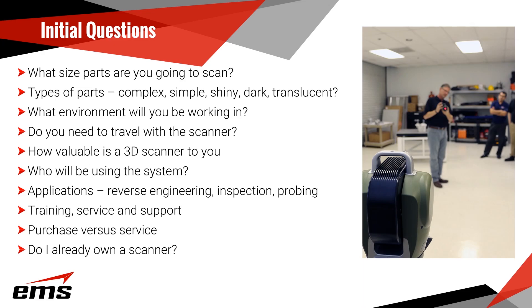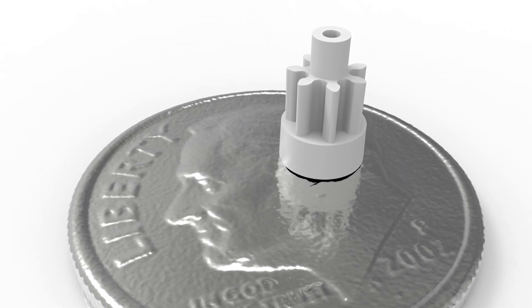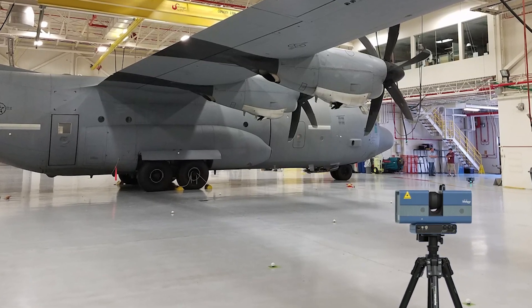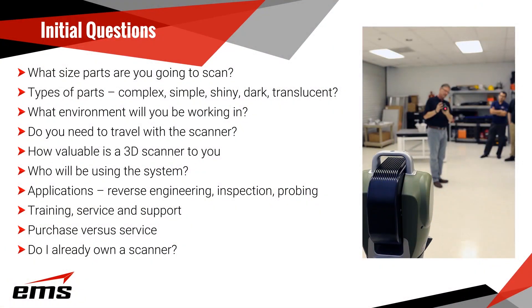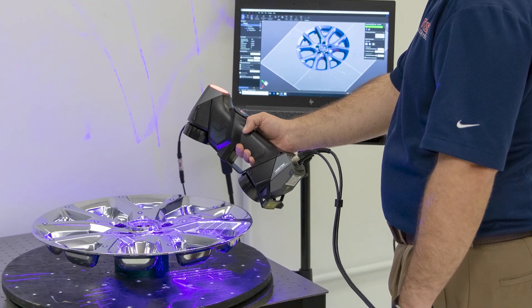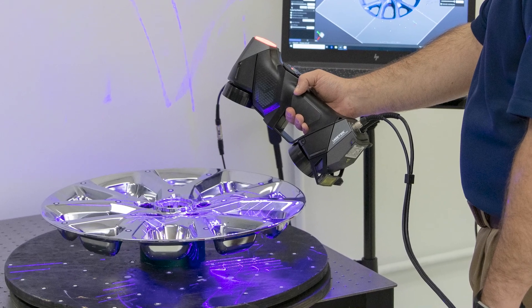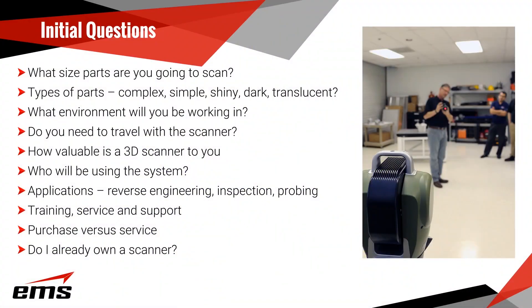You really need to look at things like: what is the size of the parts you want to 3D scan? Are you primarily doing very small parts, medium-sized parts, or large parts? Do you want to be able to do a combination of small and large? Secondly, what type of parts are they? Are they basic shapes, very organic, very complex with lots of features and holes, extremely shiny, very dark, multicolored, or translucent?